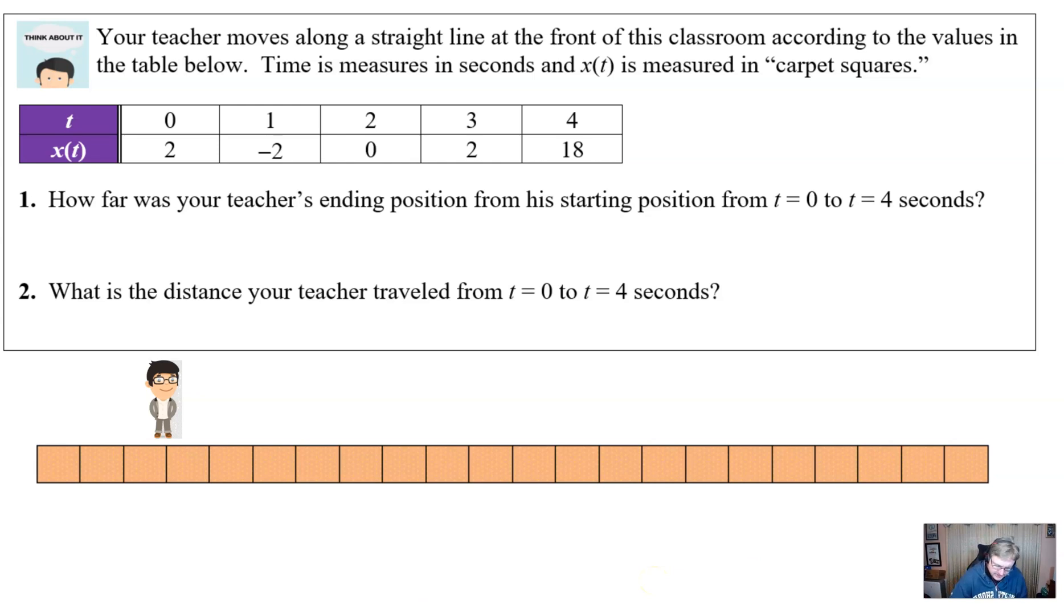Your teacher, when you could pretend right now that I'm your teacher, moves along a straight line at the front of the classroom, according to the values in this table. Time is measured in seconds and X of T is measured in carpet squares because that's what I have to use in my classroom. If you're a teacher from another school, maybe you have a tiled floor. You could use the idea of tiled squares. You could also just lay out some little tick marks along the floor using some masking tape, and that would work as well. But I would tell my students at time zero, I'm going to be at the second carpet square over from the middle of the room. At time one, I will be at the negative two carpet square. That's two left from the middle, and et cetera, et cetera.